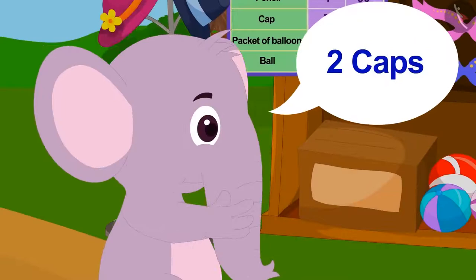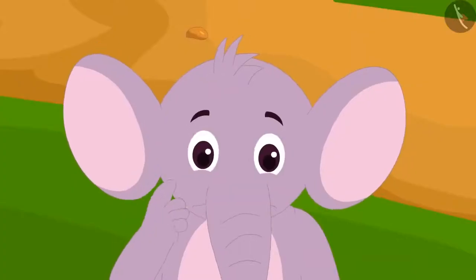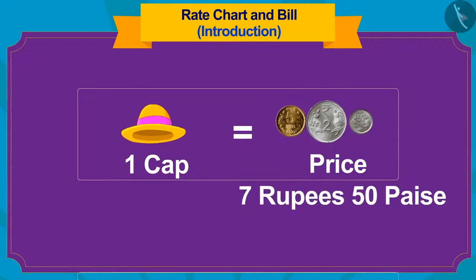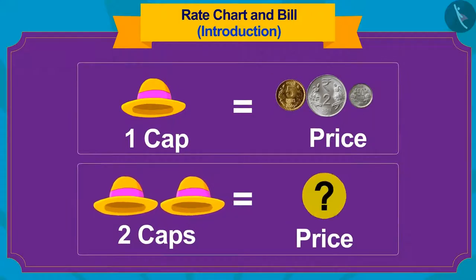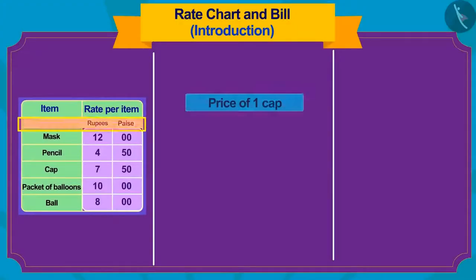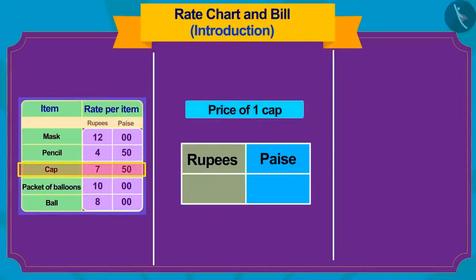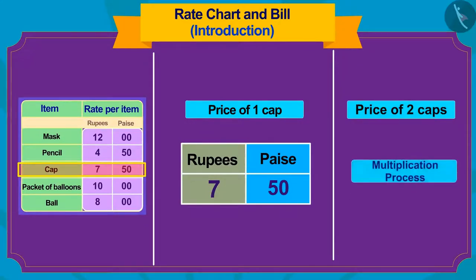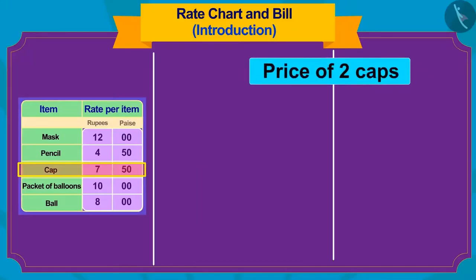Appu has to buy two caps. Appu is thinking that the price of one cap is 7 rupees 50 paise. So how much will two caps cost? Come, let us help Appu. First, we will write the price of a cap in rupees and paise. Now, what do we need to do to find the price of two caps? Yes, we have to use the process of multiplication.